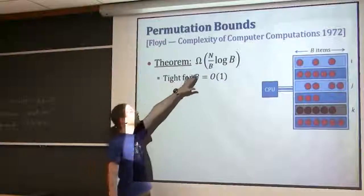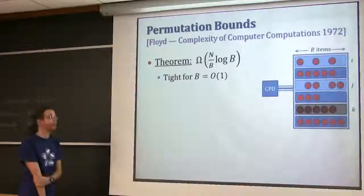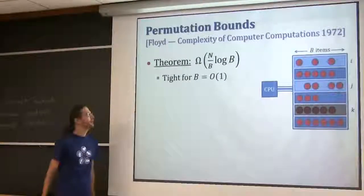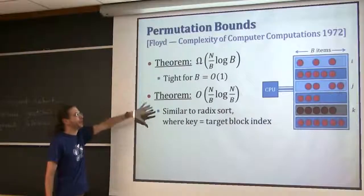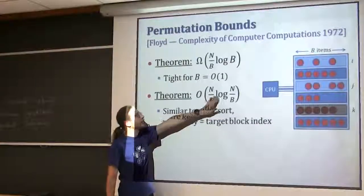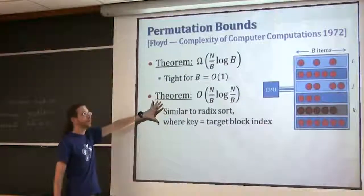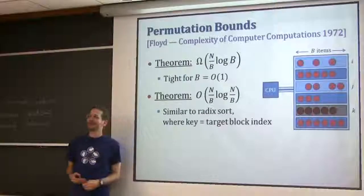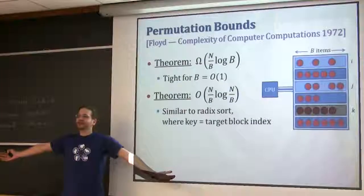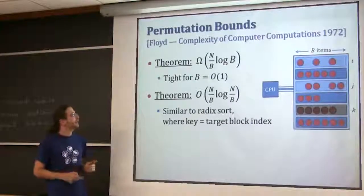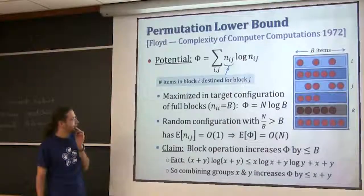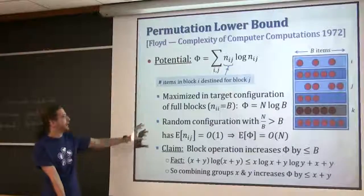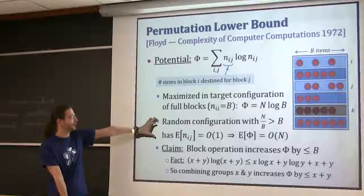We've proved this theorem that you need at least N over B log B. But that's not the right answer - there's no matching upper bound. On the upper bound side, the paper has an almost matching lower bound with another log - N over B log N over B instead of log B. And the rough idea of how to do that is basically a radix sort. In one pass through the data you can rewrite everything; you do log of N over B passes, because that's how many blocks there are, and so this is how many passes you need by a binary radix sort.